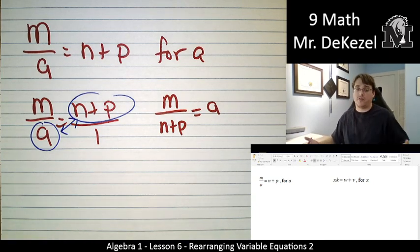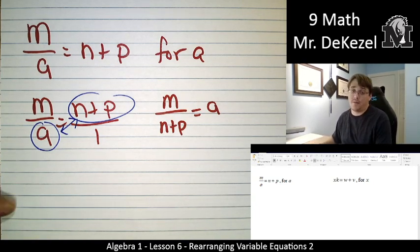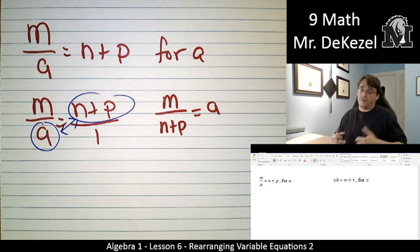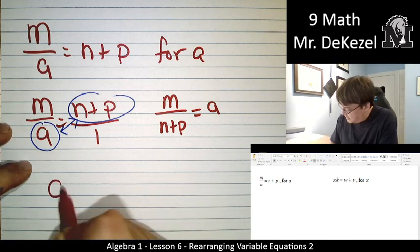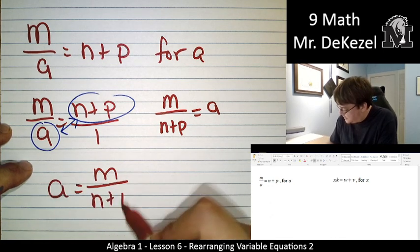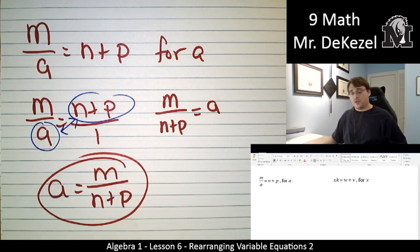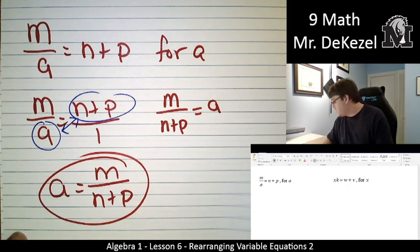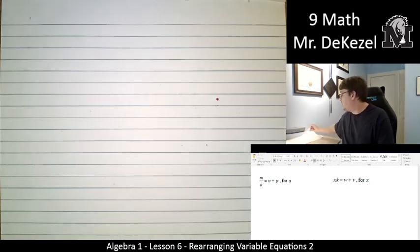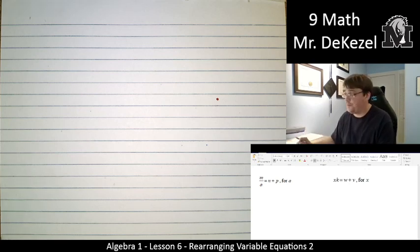I just got rid of the one already. I'm going to do my last step where I flip it around because what I want to solve for I want to be on the left. A is equal to m over n plus p. OK, so when we, whatever we have on the top, we're going to go ahead and switch it with what's on the bottom when we want to know what's on the bottom for what we want to solve for it.